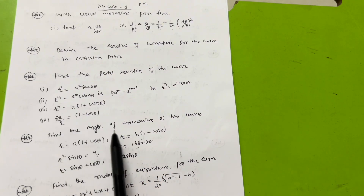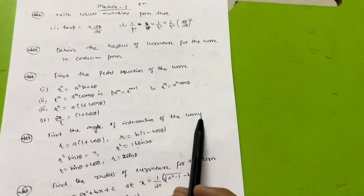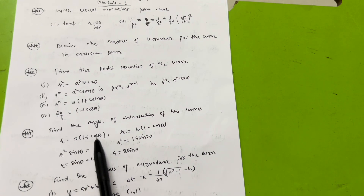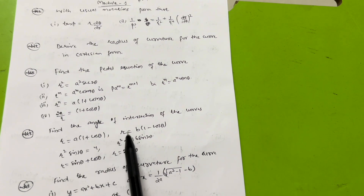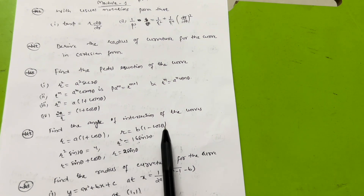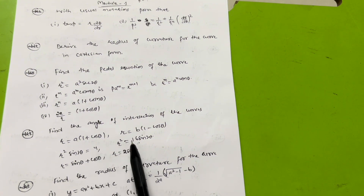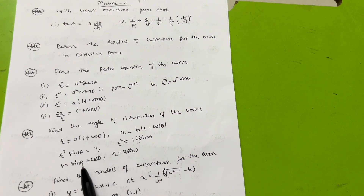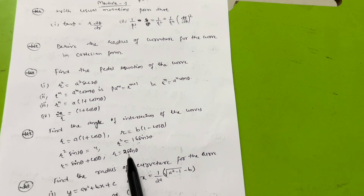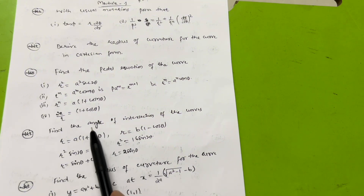Next, find the angle of intersection of the curves: r = a(1 + cos θ) and r = b(1 − cos θ); r² sin 2θ = 4 and r² = 16 sin 2θ; r = sin θ + cos θ and r = sin θ. These are three problems from the angle of intersection of curves.